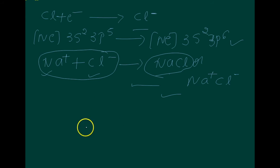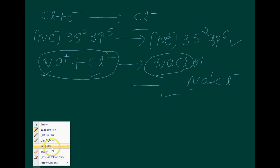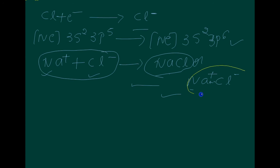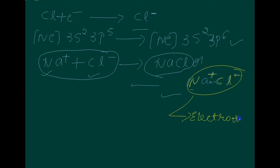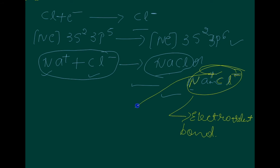The bond formed as a result of the electrostatic attraction between positive and negative ions — in NaCl, between Na⁺ and Cl⁻ — was termed the electrovalent bond. The electrovalence is thus equal to the number of unit charges on the ions.